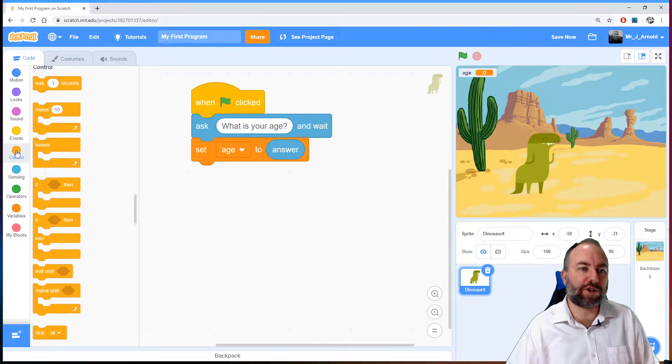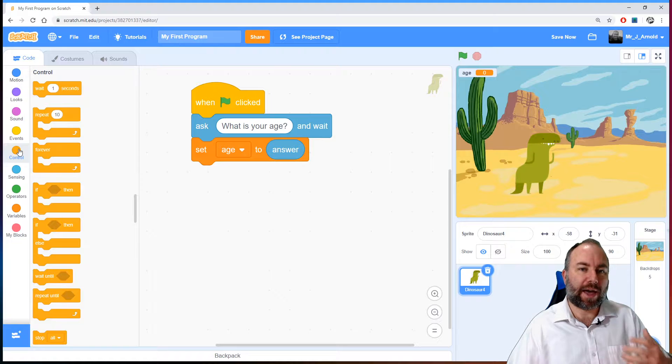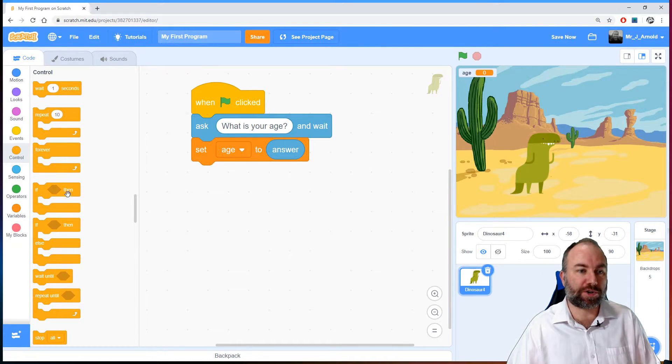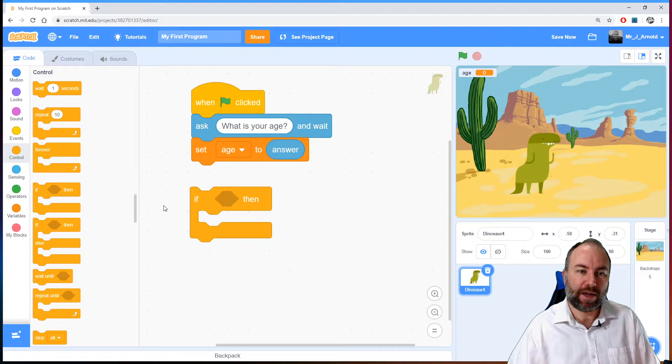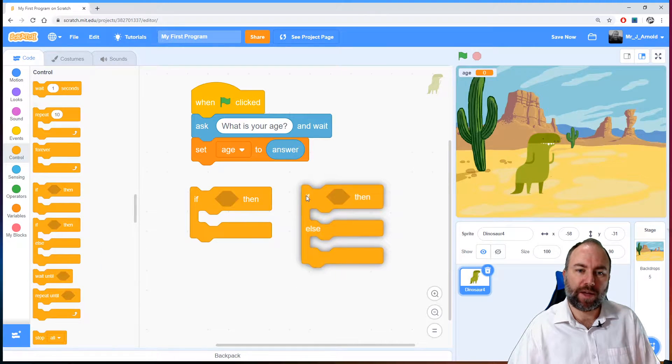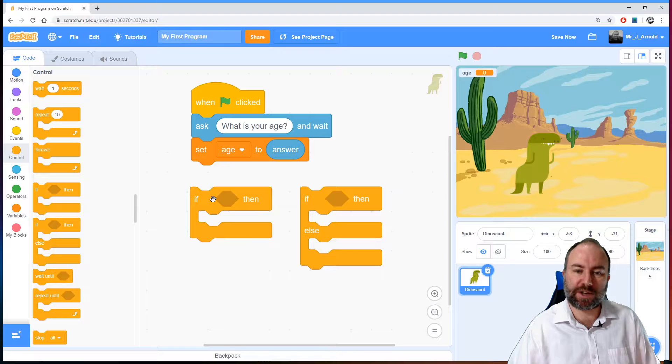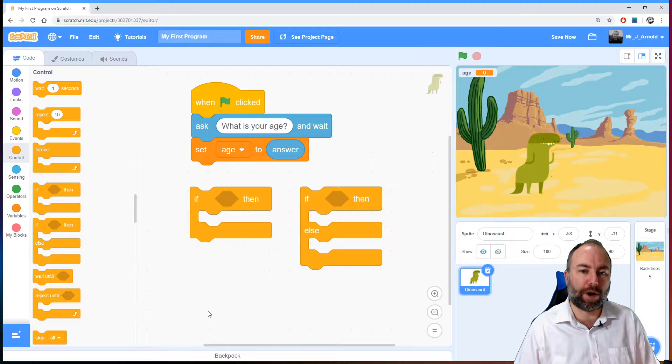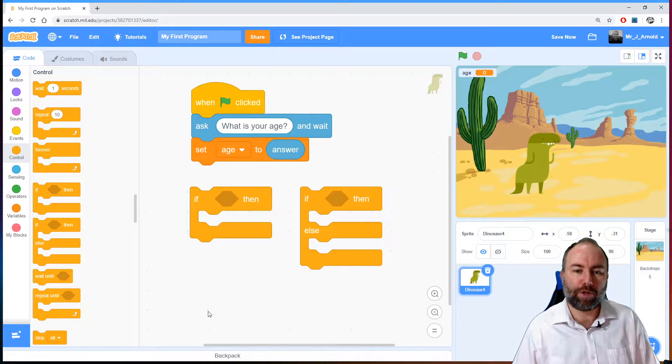So how do we do that? Well we need to go to the control section. And in this control section we can see that we have some blocks with that word if in it. Two of them here: if on the left hand side and if else on the right hand side.